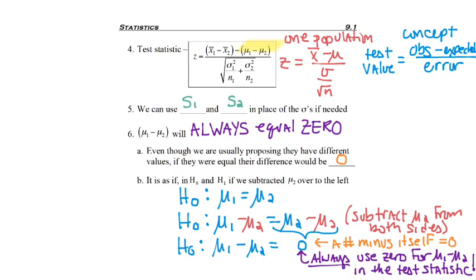So in the formula that we have up here, mu1 minus mu2 will always be 0.